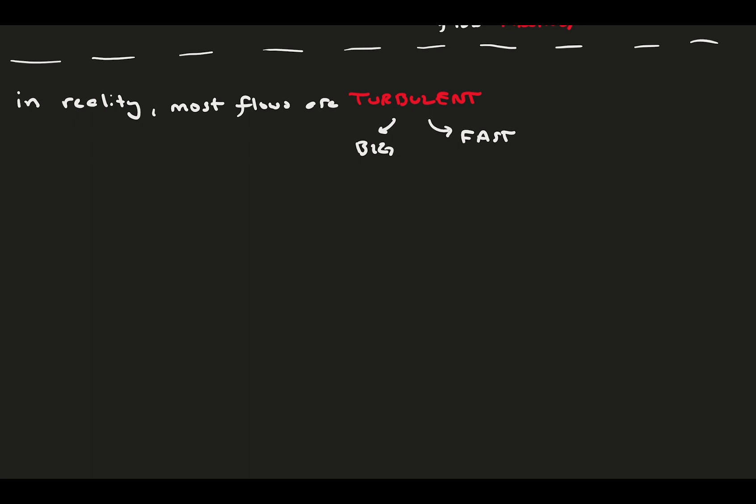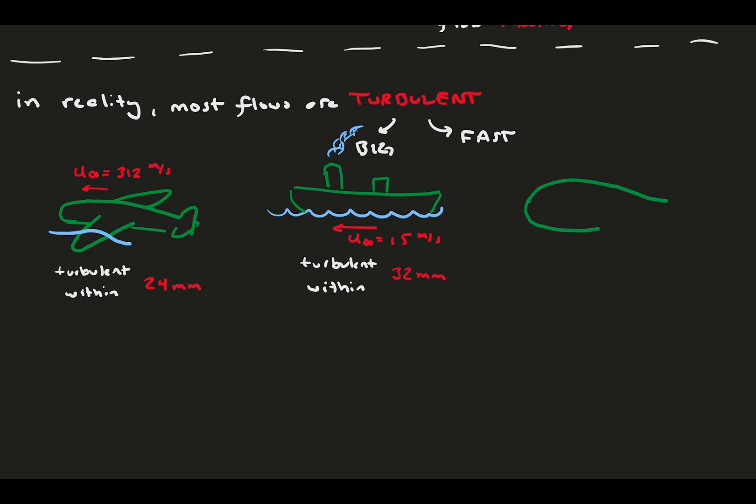While laminar flows are neat and easier to deal with theoretically, in reality, most flows are actually turbulent. Turbulence occurs when the flow is either very big or very fast. Take some realistic flow examples. An aircraft in cruise is both big and fast, and at a typical cruise velocity, flow transitions to turbulence within 24 millimeters of traveling on the craft.